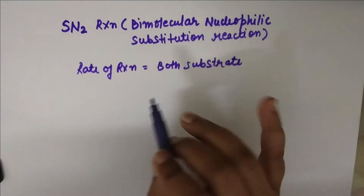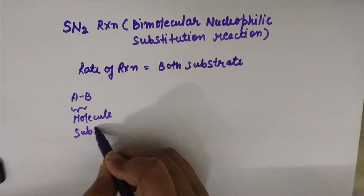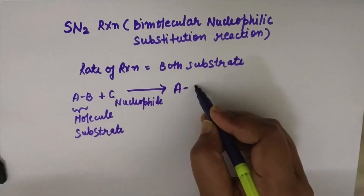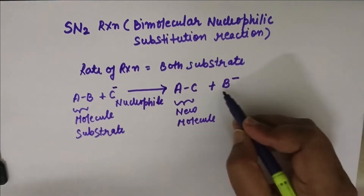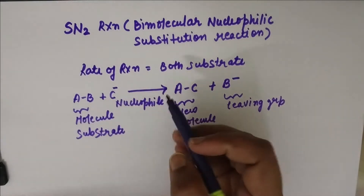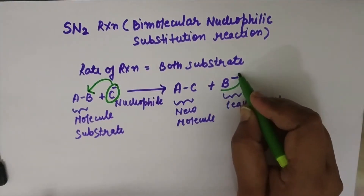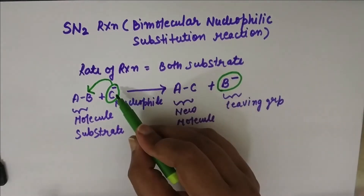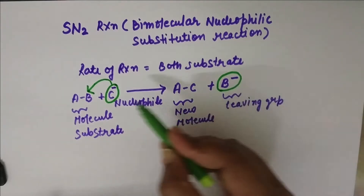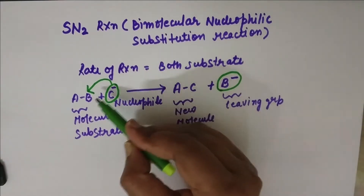I will explain it with a common example. Let's say AB is one molecule, or the substrate, and C is the nucleophile. When the reaction takes place, A and C form a new molecule, and B acts as a leaving group — it leaves the molecule AB. So the nucleophile C has replaced B, meaning C has substituted B. That is why it is called a nucleophilic substitution reaction.